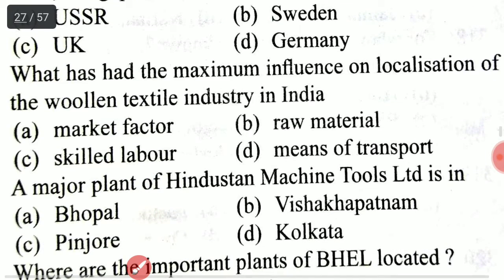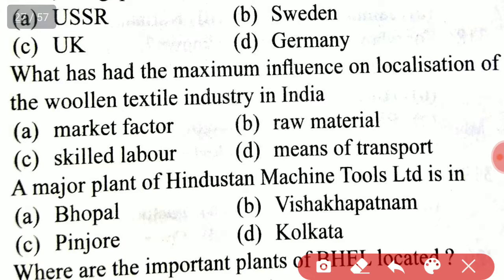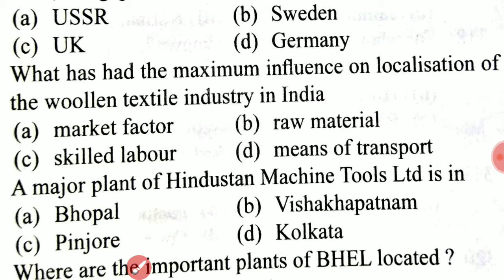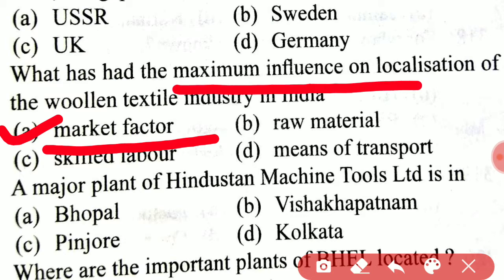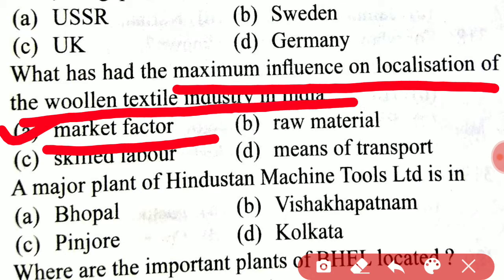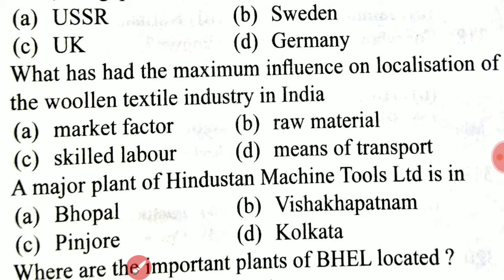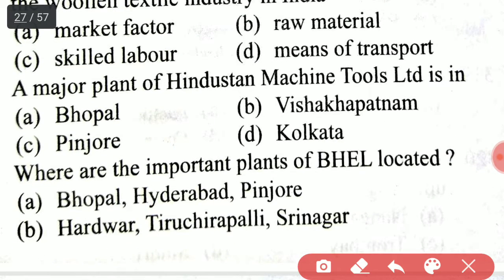What has had the maximum influence on the localization of the woolen textile industry in India? The answer is option A, market factor — this has the maximum influence on the localization of the woolen textile industry in India. Next, a major plant of Hindustan Machine Tools Limited is in?